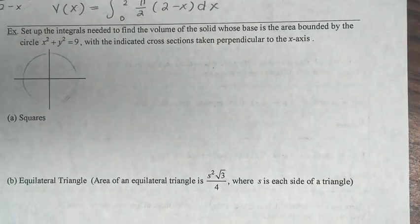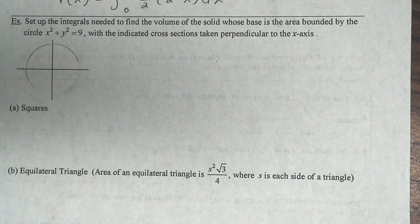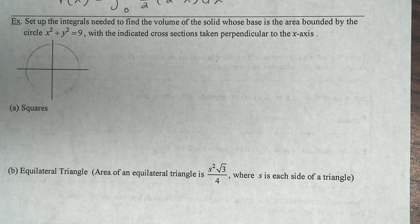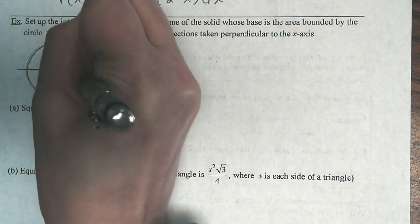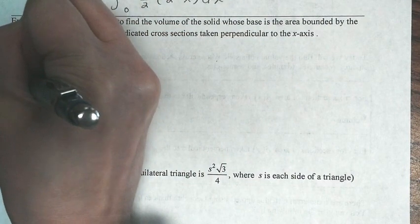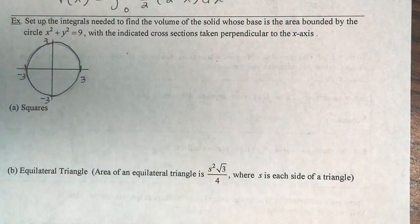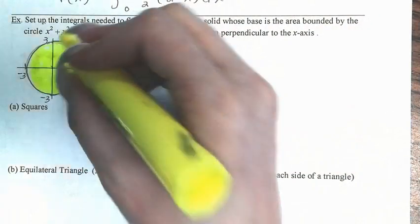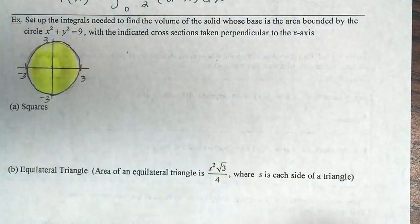For the next example, they ask you to set up the integrals to find the volume of the solid whose base is the area bounded by the circle x² + y² = 9, with cross sections taken perpendicular to the x-axis. First, draw the circle. We have that this is 3, negative 3, 3, and negative 3 on the axes. The 2D area is the entire interior of the circle, which is nicely bounded.